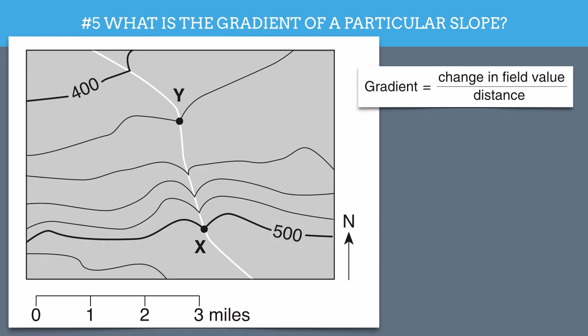Well, I have to find the elevation of X and Y. Now, point X is easy because it's on this line labeled 500. So X has an elevation of 500.